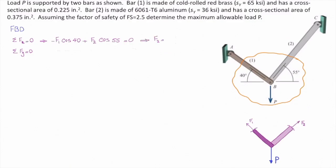If I solve it for F2, that gives me F2 is equal to cosine of 40 divided by cosine of 55 times F1. And if I plug the values, that gives me 1.33 F1.